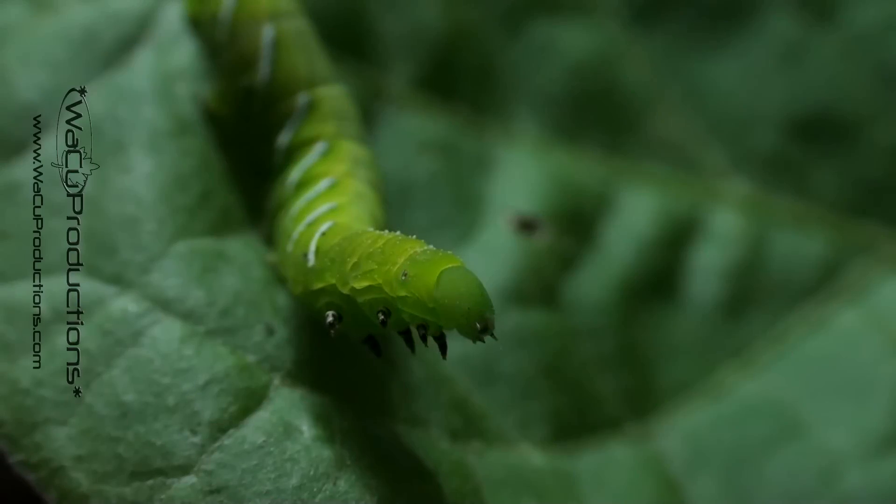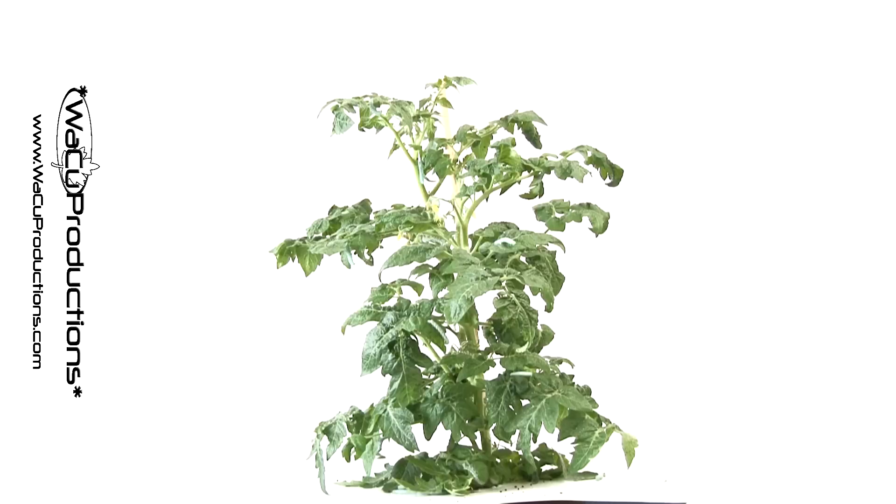The tomato hornworm, which is actually a caterpillar, can be found throughout the United States, northwestern Mexico, and even southern Canada.